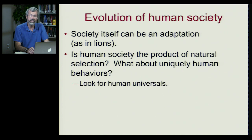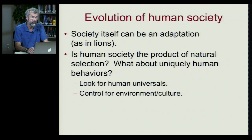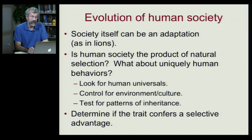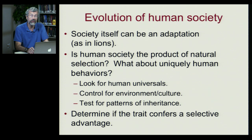To do this, we want to look for human universals — that is, something found all over the world regardless of culture. We want to try to control for these cultural factors or the environment, and then we're going to test for patterns of inheritance. After these traits are identified, we might want to ask whether these confer some sort of evolutionary or selective advantage.